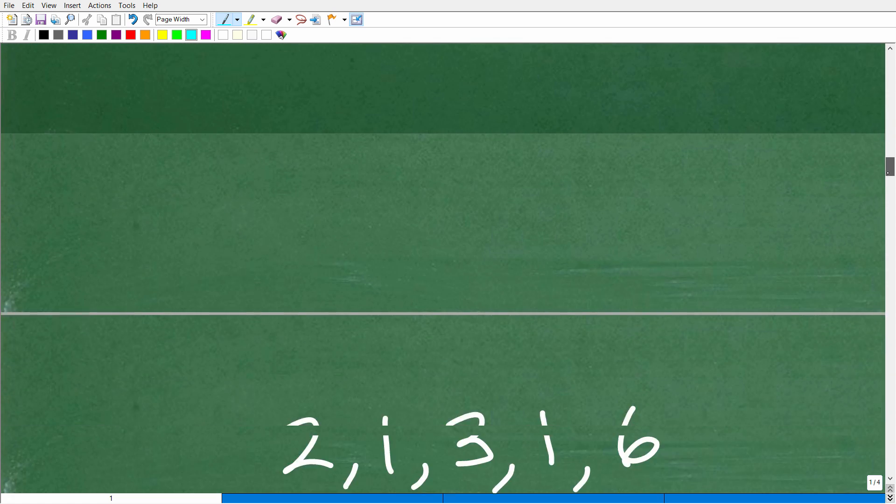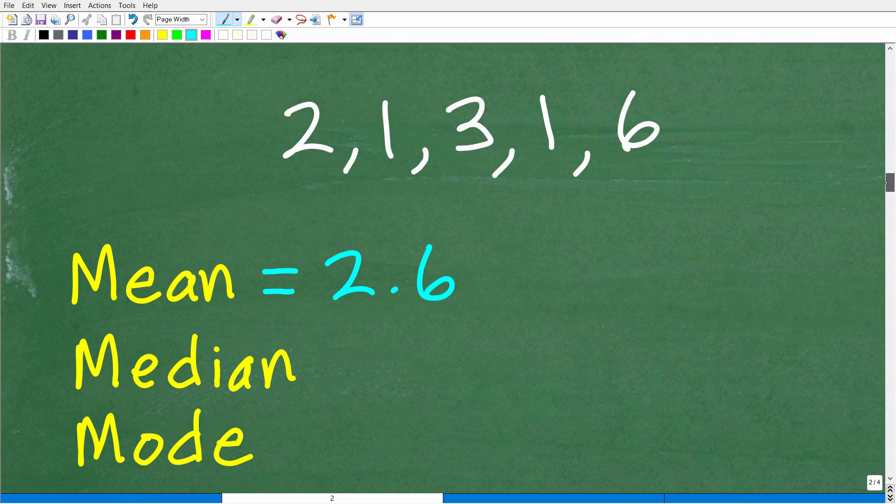With our little data right here, we're measuring the measures of central tendency. We now understand what the mean is. Now we're going to figure out what the median and mode are next.